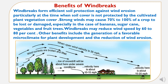Windbreaks form efficient soil protection against wind erosion, particularly when soil cover is not protected by crop vegetation. Strong winds may cause 70 to 100 percent of a crop to be lost or damaged, especially in the case of bananas, sugarcane, vegetables, and fruit trees, which are very sensitive to wind damage. Windbreaks may reduce wind speed by 60 to 80 percent and protect the crop to a significant level. Other benefits include generation of a favorable microclimate for plant development and reduction of wind erosion.